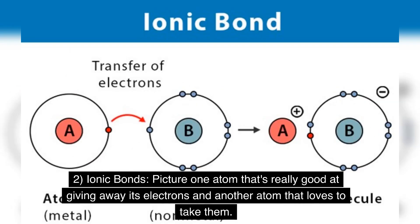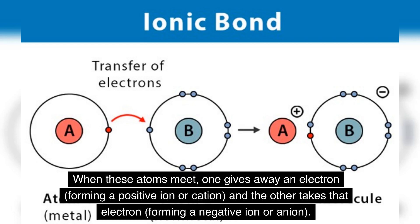Ionic bonds: Picture one atom that's really good at giving away its electrons and another atom that loves to take them. When these atoms meet, one gives away an electron, forming a positive ion or cation, and the other takes that electron, forming a negative ion or anion.